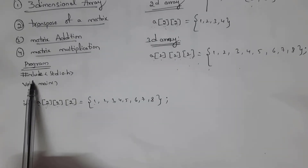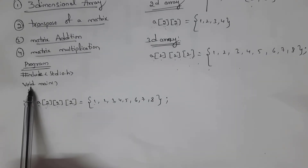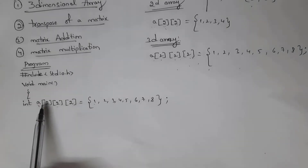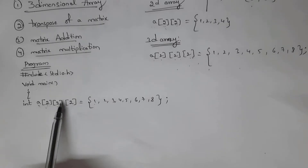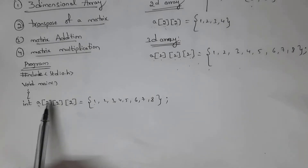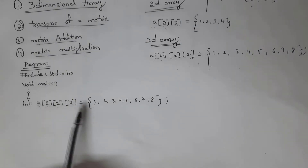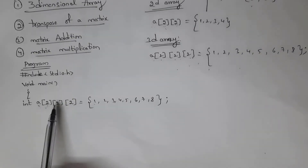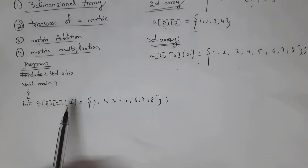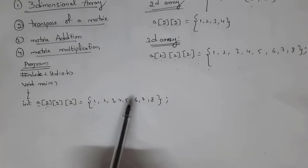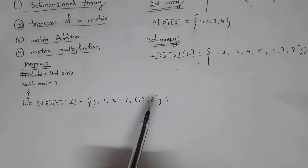I will explain the three-dimensional array program. First I written #include stdio.h, after that I written void main. Inside void main I written int a, where 'a' is the array name, inside square brackets I written [2][2][2] — this two represents the first dimension, this two for the second dimension, and this two for the third dimension. Total I can store eight elements: one, two, three, four, five, six, seven, eight.